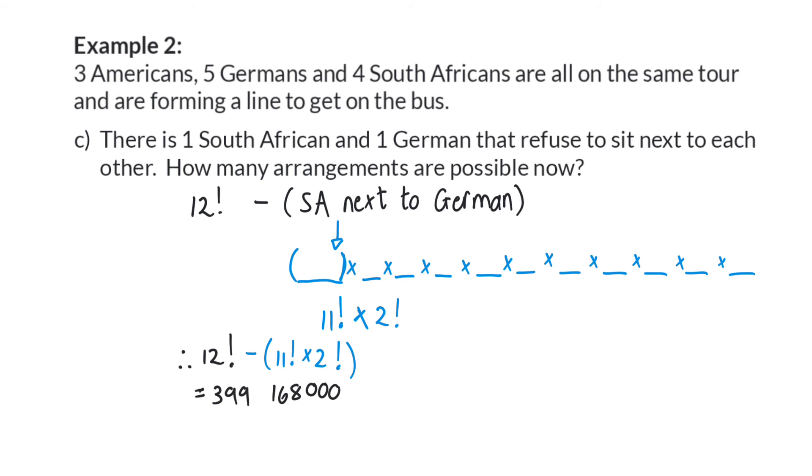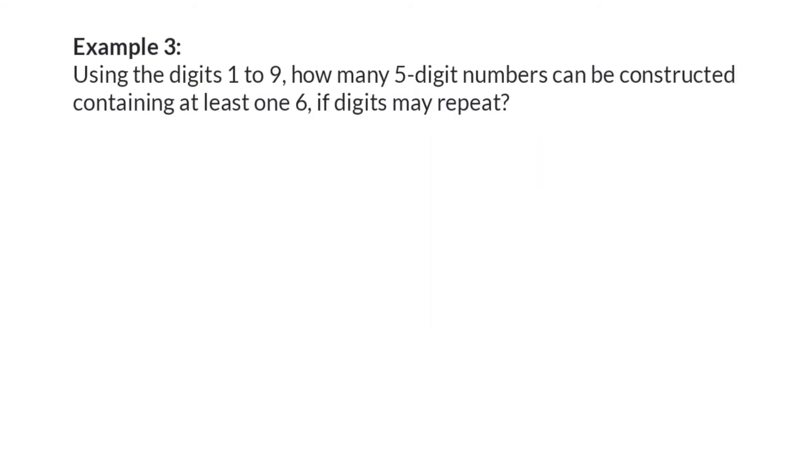Let's have a look at another example where the opposite calculation will be more effective. Example 3: Using the digits 1 to 9, how many 5-digit numbers can be constructed containing at least one 6 if digits may repeat?